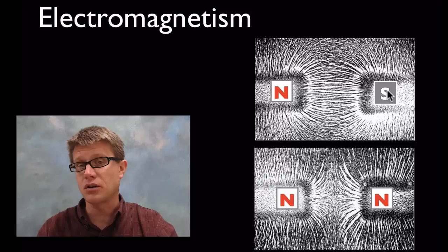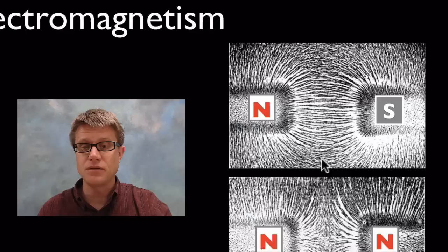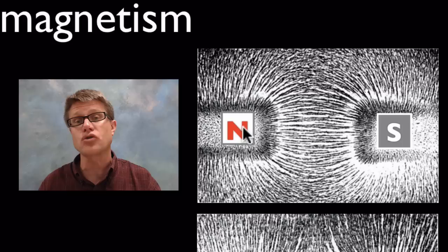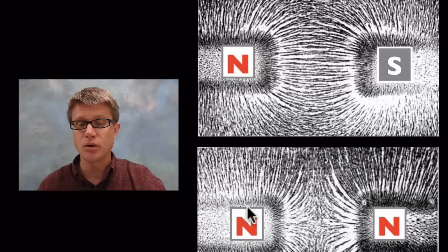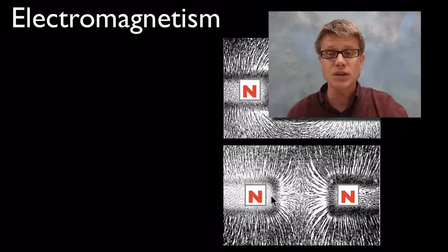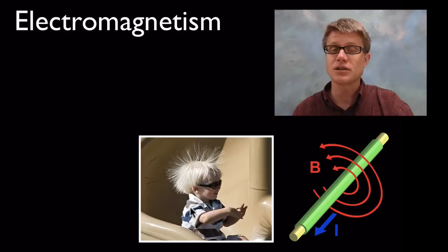Electromagnetism is also hard to see, but here's a great experiment: take a north and south pole of a magnet, put them under white paper, and sprinkle iron filings over the top. The fields become visible. If you move a north and south pole toward each other, they attract — you can see the fields pulling them together. Put two north poles together and they repel each other.